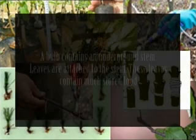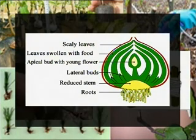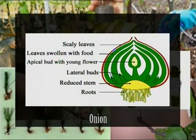A bulb contains an underground stem to which leaves are attached. These leaves contain much stored food. At the center of the bulb is an apical bud, and lateral buds are also attached. The apical bud produces leaves and a flower, while the lateral buds produce new shoots. As the plant grows and develops, it forms a new bulb underground — for example, onion.